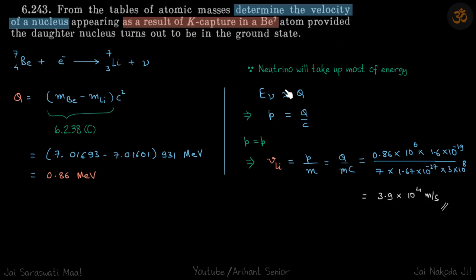So E of neutrino is same as the Q value, and this gives, because the energy of neutrino is pc, so p is equal to Q by c. So this momentum is same as momentum of daughter nuclei.